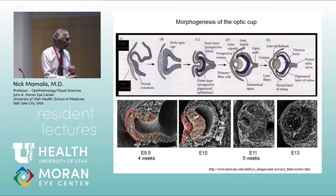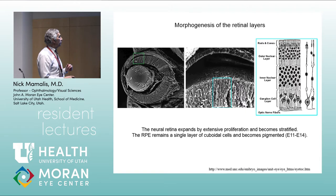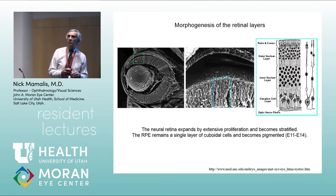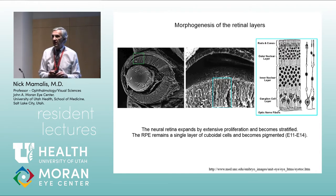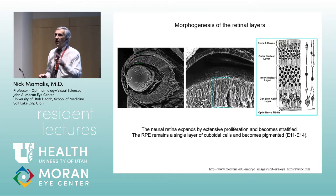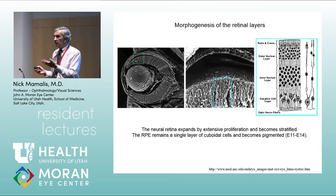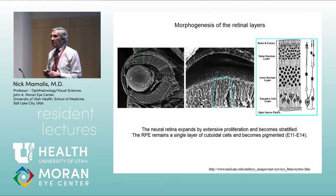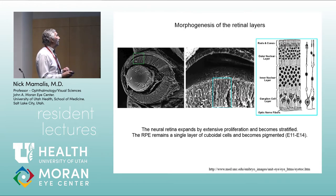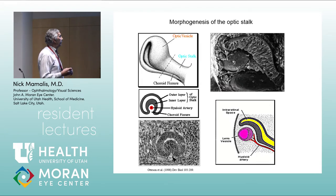Think of it as a big balloon, and then somebody takes a fist and pushes into that balloon — it forms a bilayered cup. That bilayered cup is the neuroectoderm. The most important part is that the inner neuroectoderm forms the entire retina — all the layers of the retina we'll learn about in these lecture series.